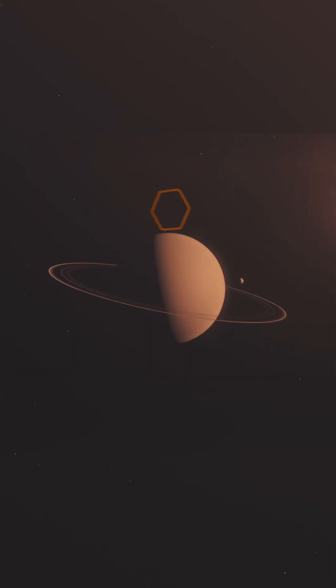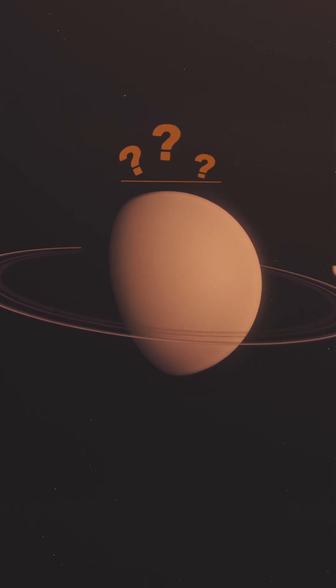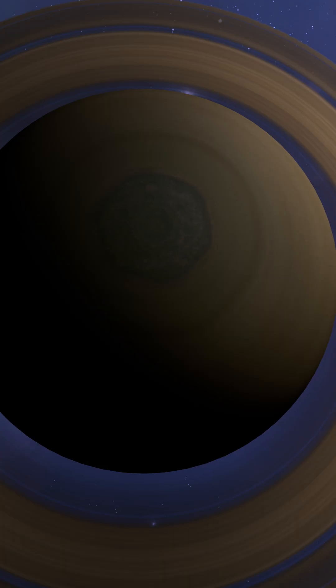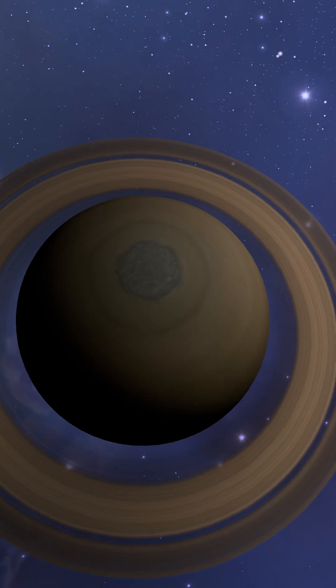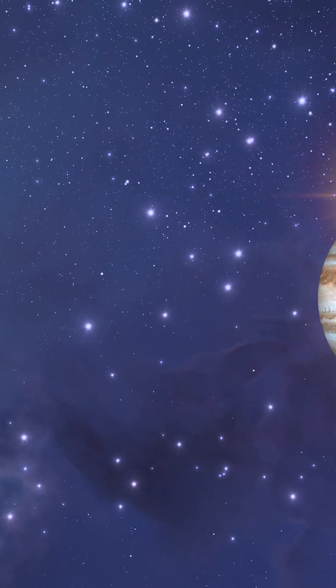Still, the hexagon raises so many questions. Why has it lasted so long? Why is it so stable? And why don't we see this on any other planet? While lab experiments and nature itself has replicated similar shapes, the sheer scale and persistence of Saturn's hexagon remains an enduring mystery of our solar system.